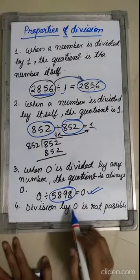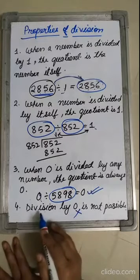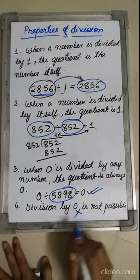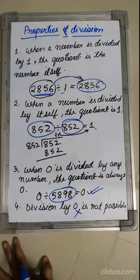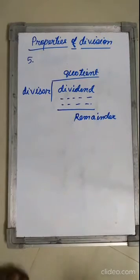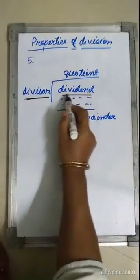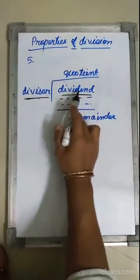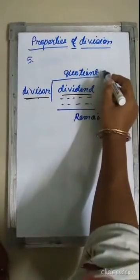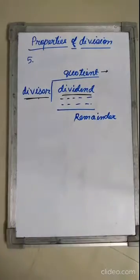Property 4: division by 0 is not possible. This is not valid in division — we cannot divide any number by 0. Now, here we have the last property, Property 5. In a division, the divisor is outside the box, the dividend is inside the box. When we divide the dividend by the divisor, we get the quotient, and if there is any value left, we get the remainder.